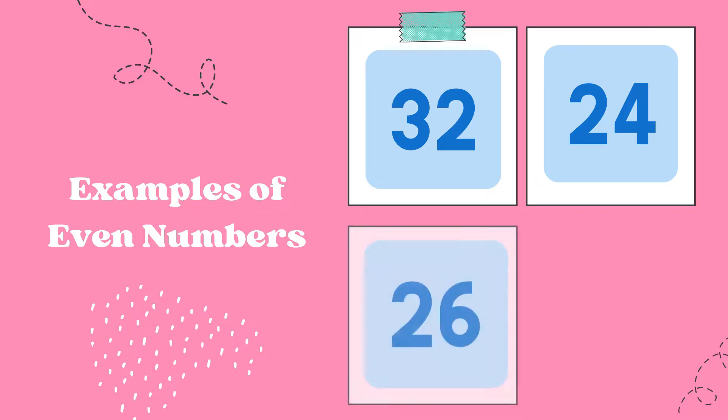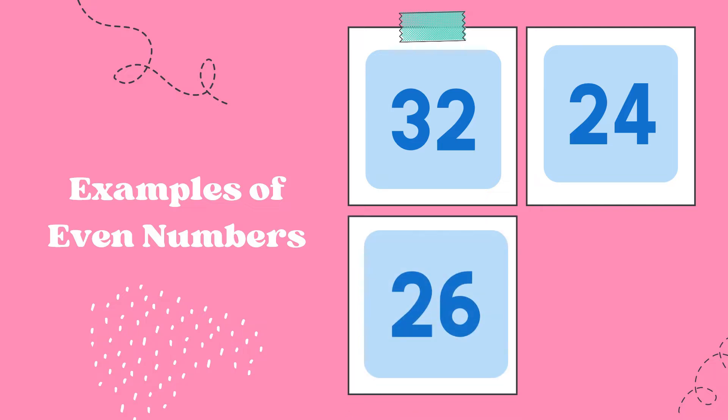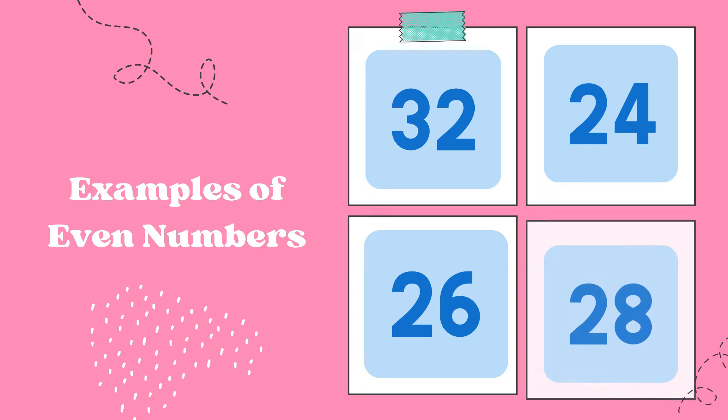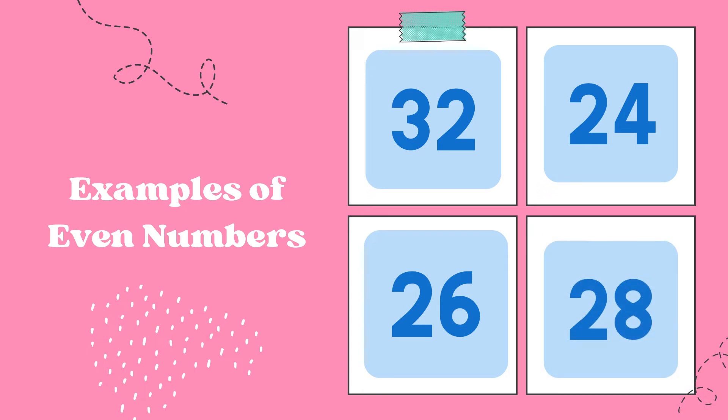Next is 26, ending with six, and the last one is 28, ending with eight. All numbers ending with zero, two, four, six, or eight are even numbers.